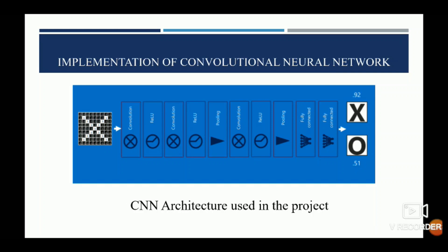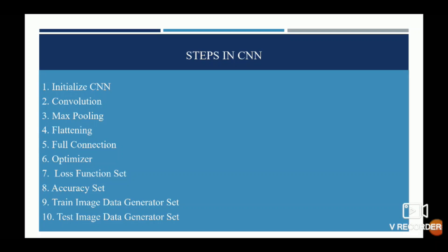DCT is followed by CNN. This is the architecture of CNN used in our project. The steps in CNN are: first, initialize the CNN; second, convolution; third, max pooling — used to reduce dimensionalities; fourth, flattening — converting data into a 1D array to create a single long feature vector; fifth, full connection, where every node in the first layer is connected to every node in the second layer; followed by setting the loss function, then the accuracy, then the train image data generator, and the test image data generator.